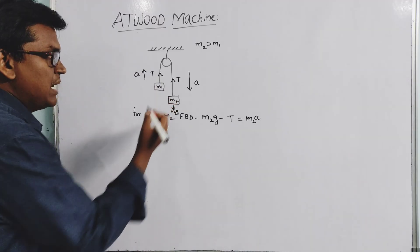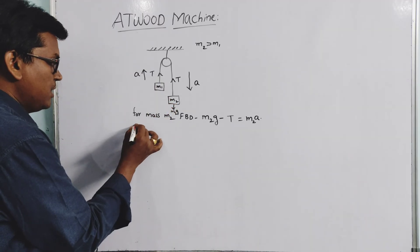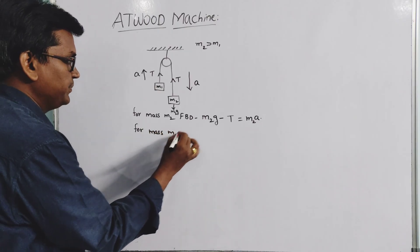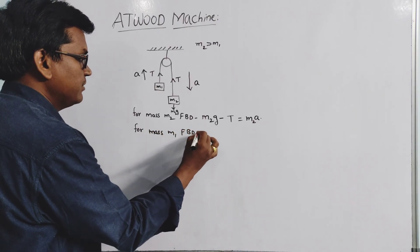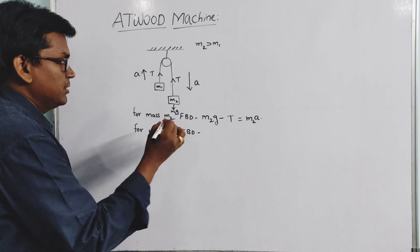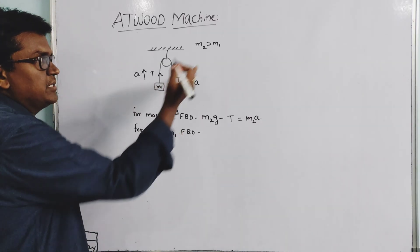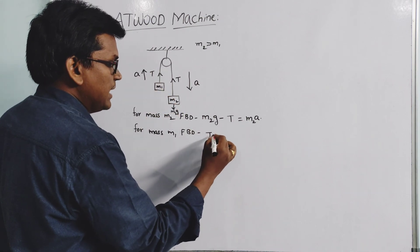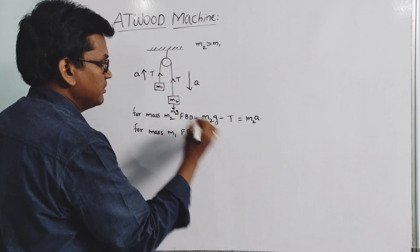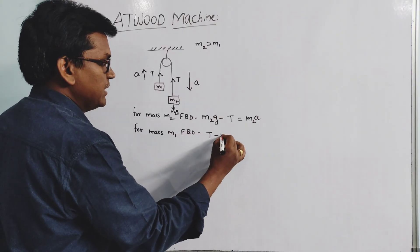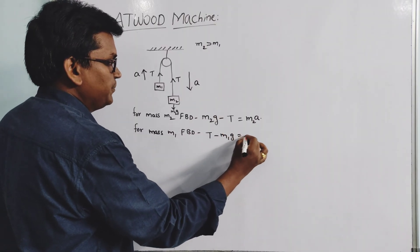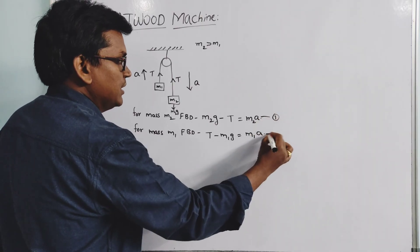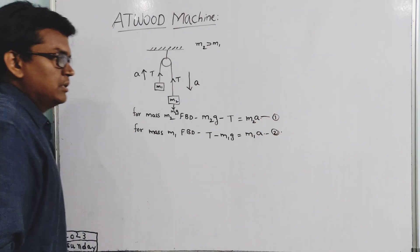For mass m1, since it is lighter compared to m2, it will go upward. The tension acts upward and weight m1g acts downward, giving the equation: T minus m1g equals m1a. Let this be equation 1, and the previous one equation 2.